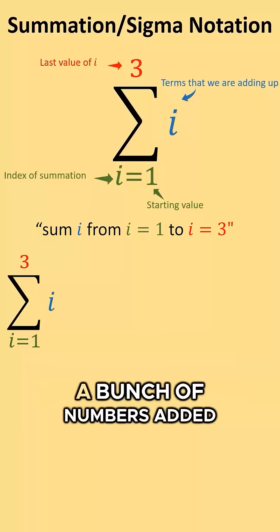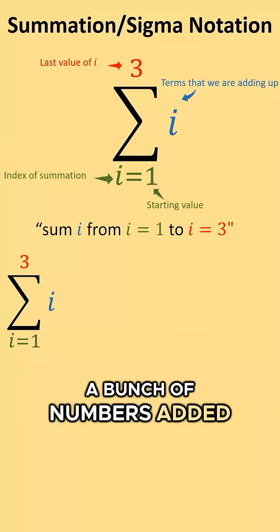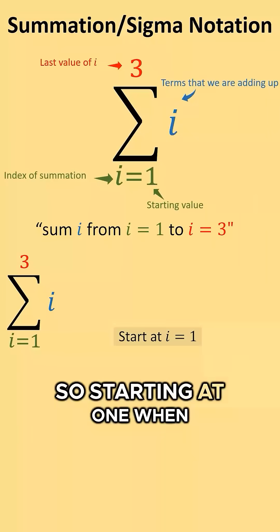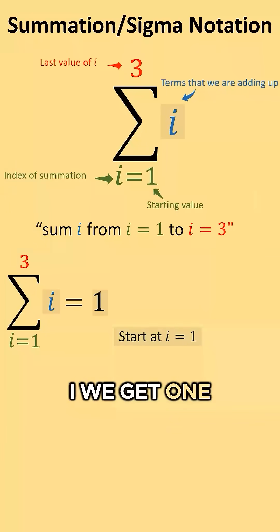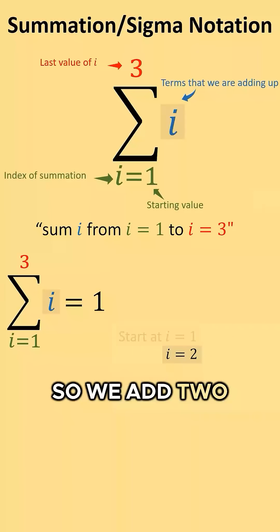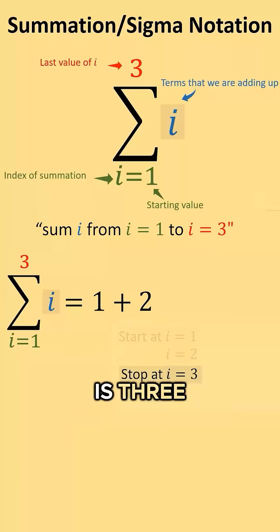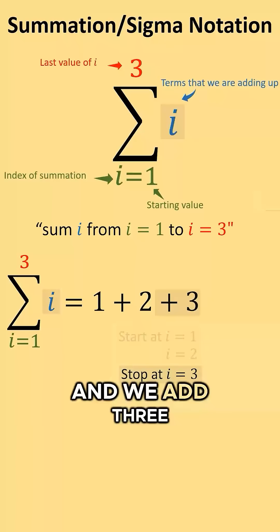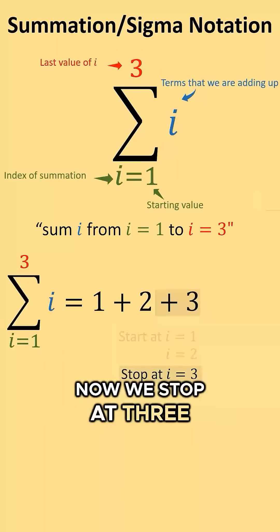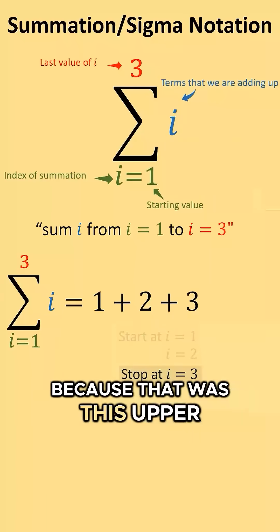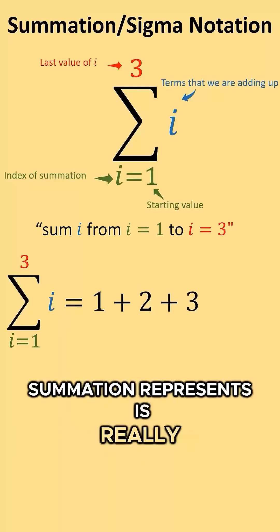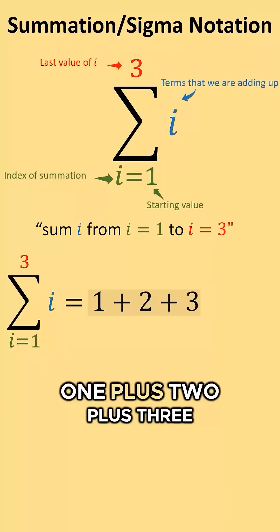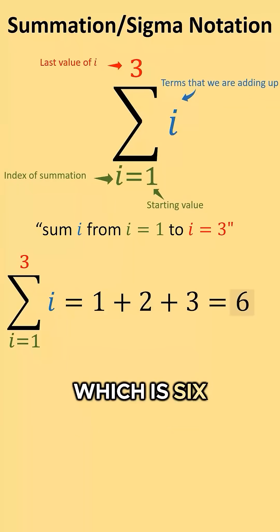So these summations represent a bunch of numbers added together. Starting at 1, when we plug 1 into i, we get 1. We go up to the next number, which is 2, so we add 2. We go up to the next number, which is 3, and we add 3. We stop at 3 because that was the upper number up here. So all that this summation represents is really 1 plus 2 plus 3, which is 6.